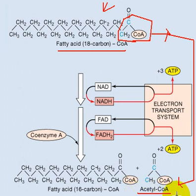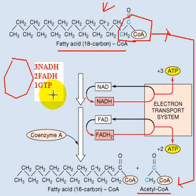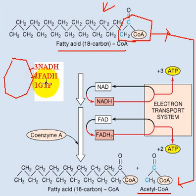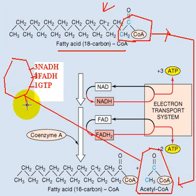This acetyl coenzyme A will enter the Krebs cycle. In the Krebs cycle, it will produce 3 NADH, 1 FADH, and 1 GTP — note that the FADH value should be 1. So acetyl-CoA goes to the Krebs cycle and produces 3 NADH, 1 FADH, and 1 GTP.